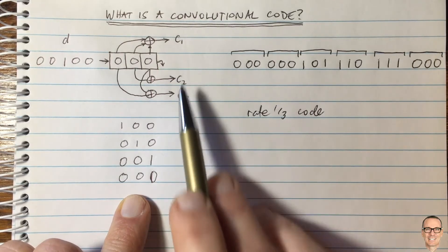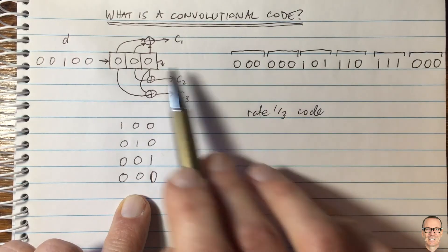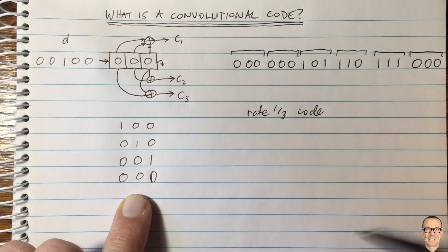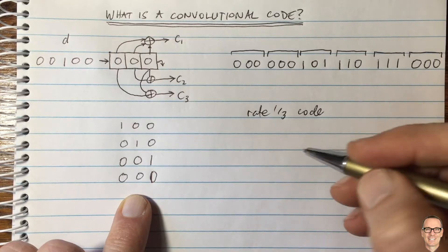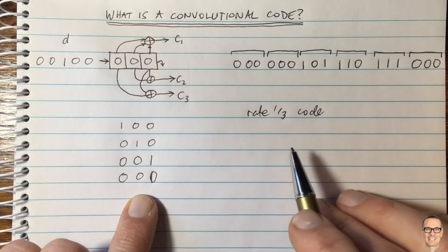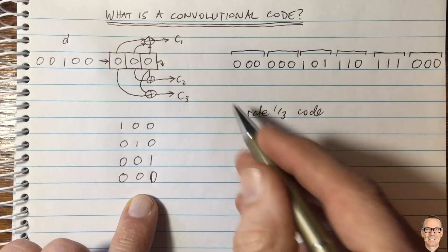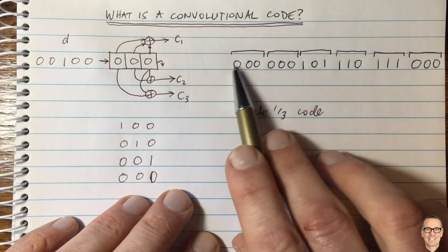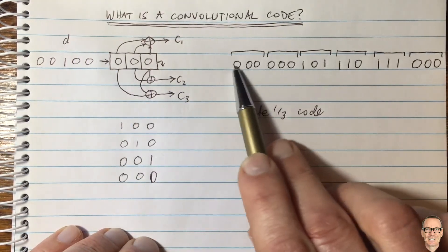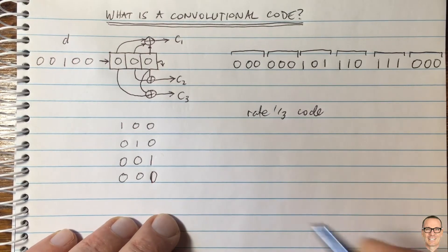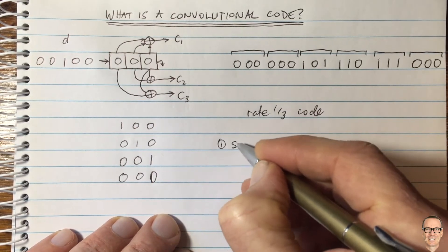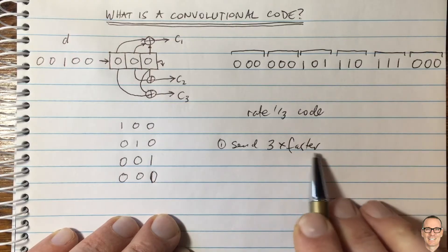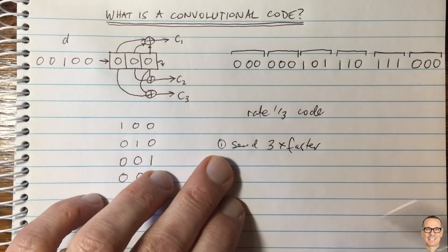We have memory and structure in the sequence, and with three coded bits this is a good design that allows us to actually correct for errors. Now, since every one data bit produces three coded bits, you have to send three bits where you used to send one. One option is to send three times as fast.